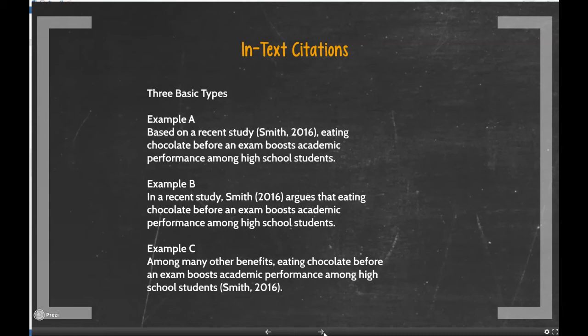Examples A and B tend to emphasize the source or give the reader an introduction to it, so I often find those styles in papers where the writer goes into detail about a particular study — they might be the first sentences introducing that study. Example C, by contrast, simply lists a study's finding as one of many examples within a paragraph.